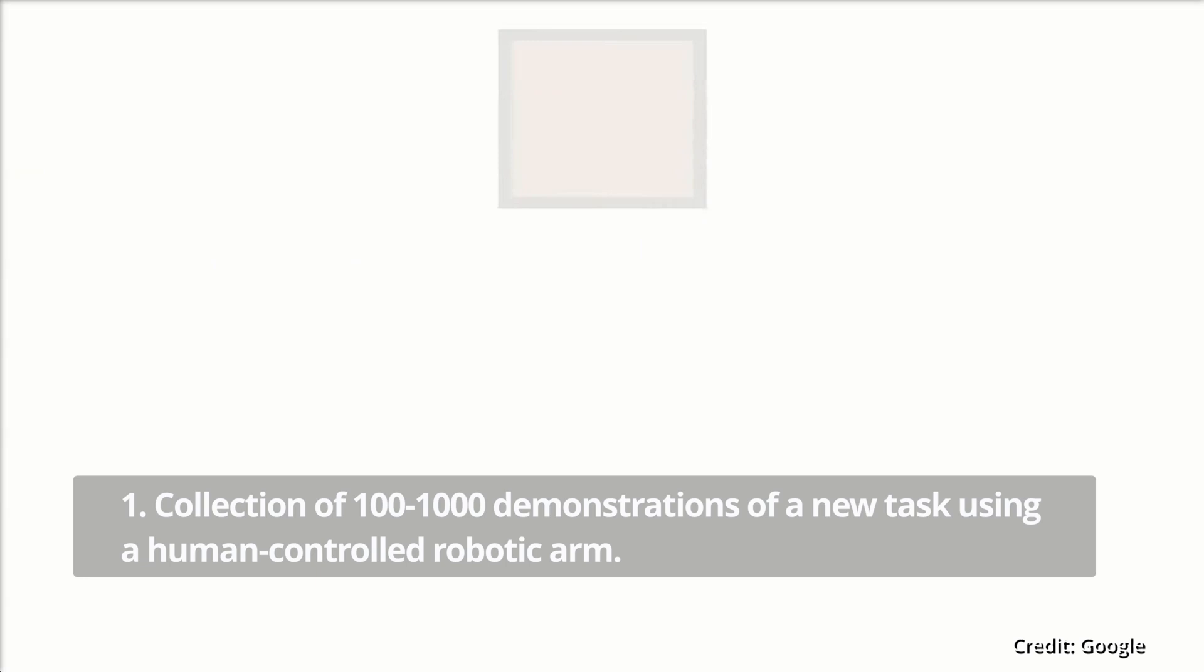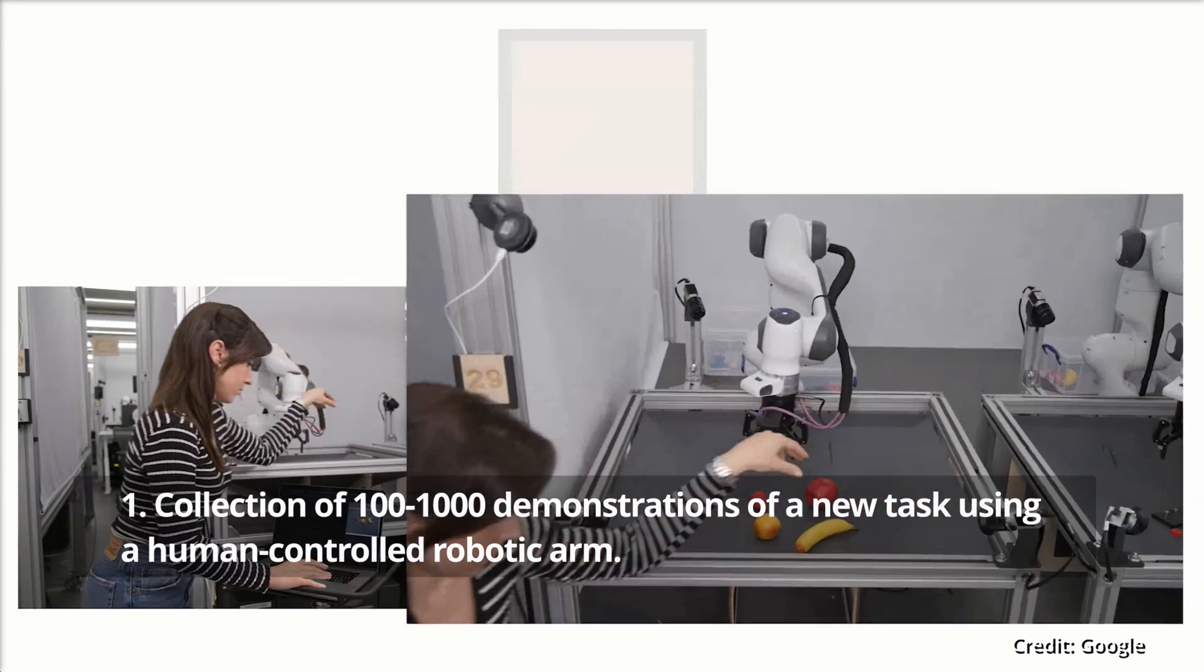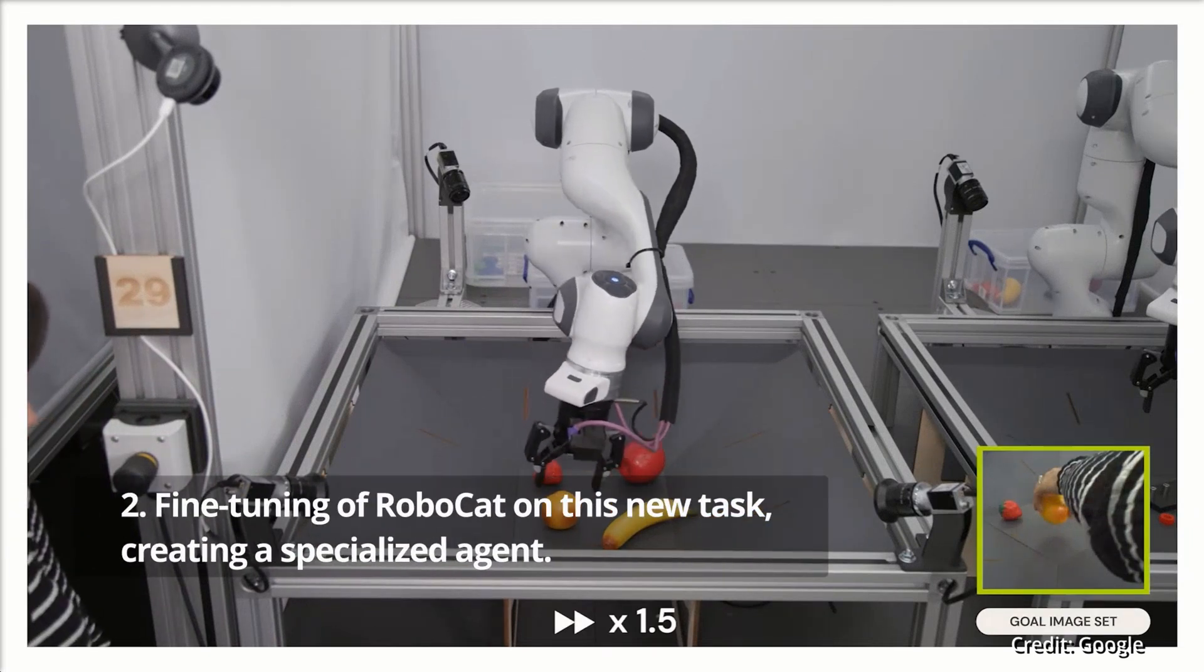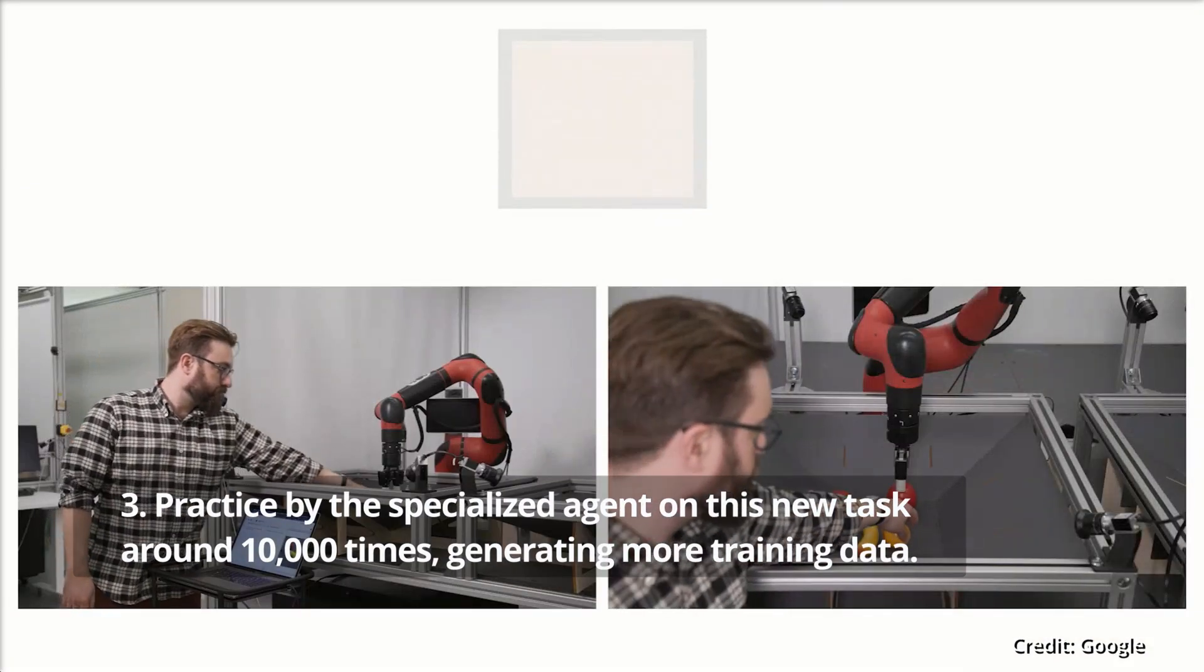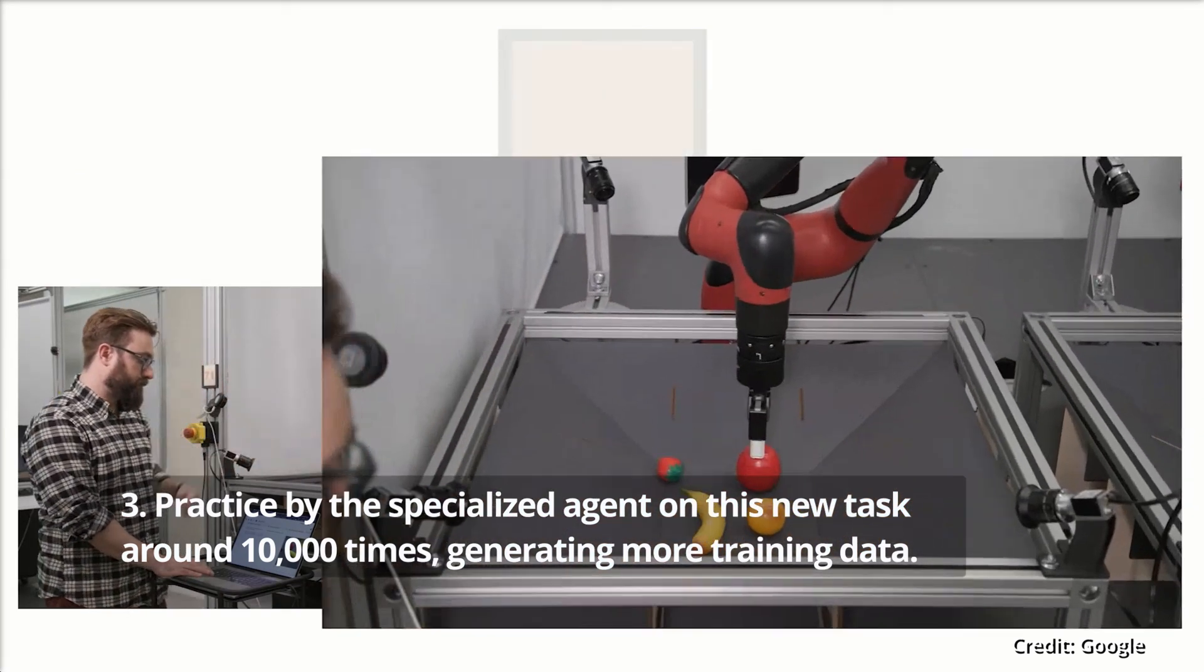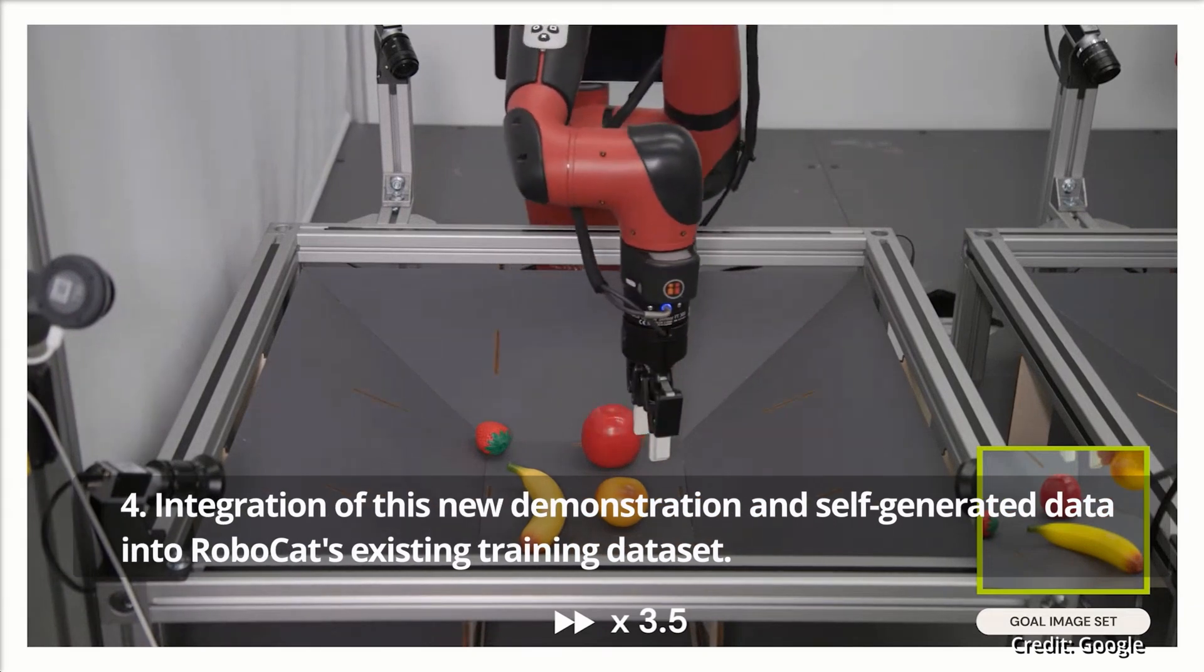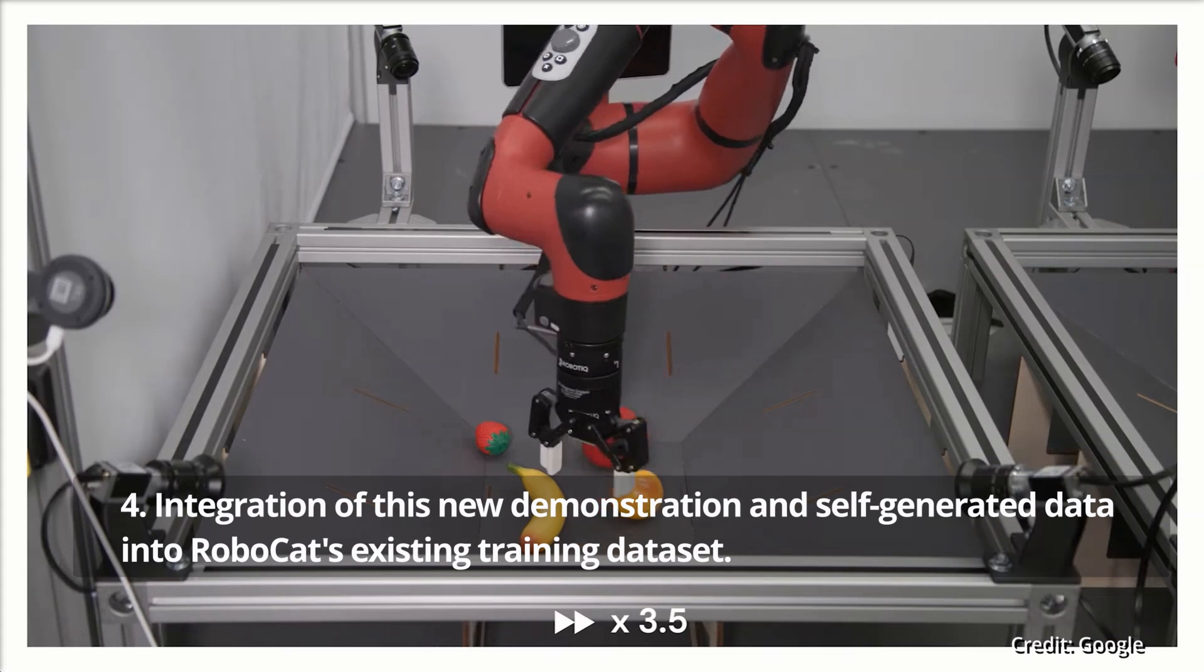Step 1: Collect 100 to 1,000 demonstrations of a new task using a human-controlled robotic arm. Step 2: Fine-tune RoboCat on the new task to create a specialized agent. Step 3: The specialized agent practices this new task around 10,000 times to generate even more training data. Step 4: This new demonstration is integrated and the self-generated data is fed into RoboCat's existing training dataset.